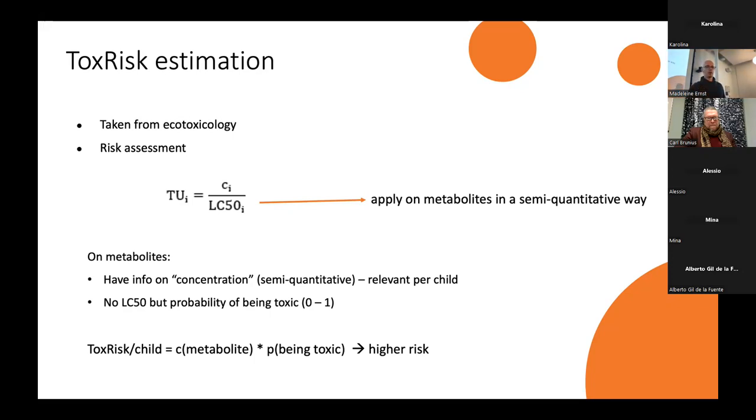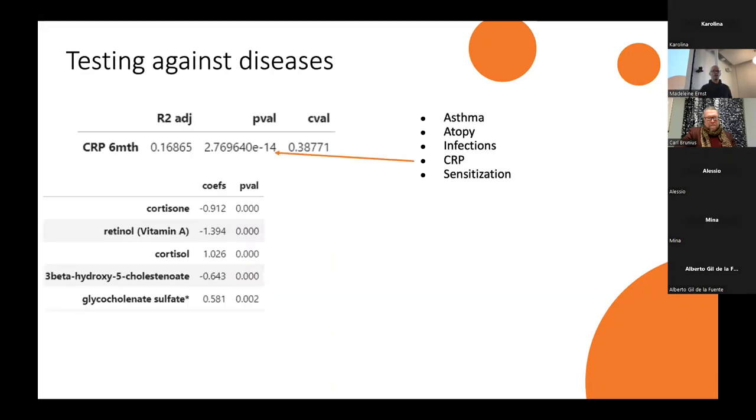And now I'm curious whether this makes any biological sense. I tested it against the diseases. I tested it against five. We have many more in the database, but these are the five which were interesting at this point: asthma, atopy, infections, CRP inflammation, and sensitization against certain allergens. I did a linear regression model. I have toxic risk per child for the metabolites turned out to be biologically active. And I tested it against CRP, and it shows an association.